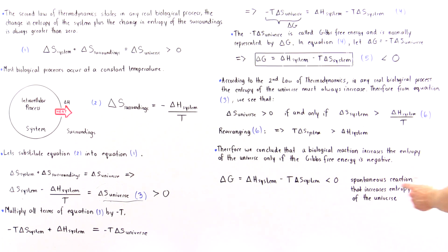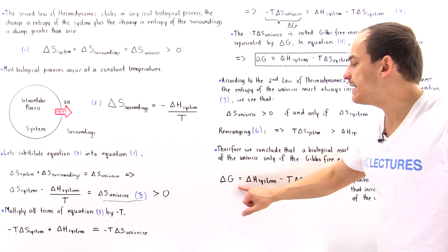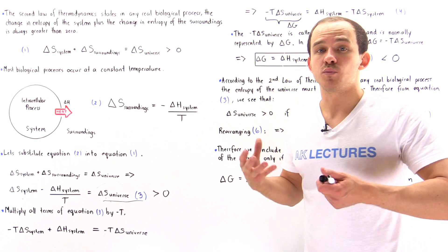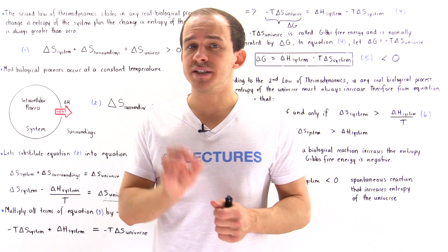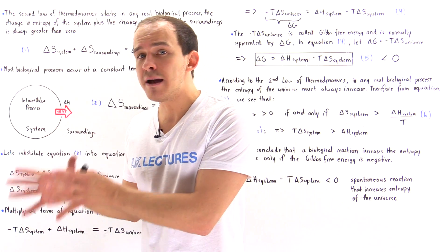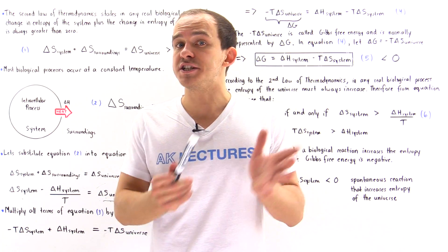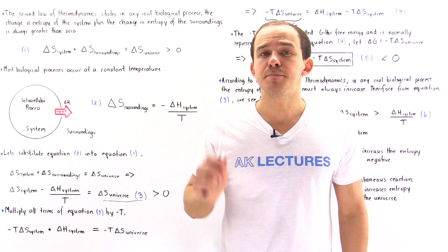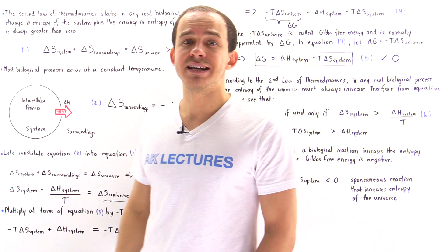A spontaneous reaction that increases the entropy of the universe at a particular temperature will always have a Gibbs free energy that is a negative value. A reaction is only spontaneous at that particular temperature if delta G is negative. If the Gibbs free energy is positive at that temperature, then the reaction will not be spontaneous — it will not take place naturally or spontaneously in nature.